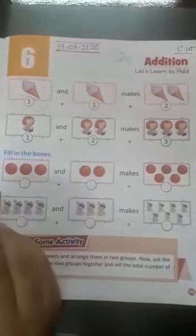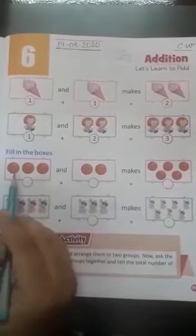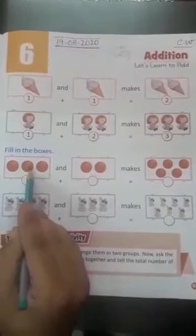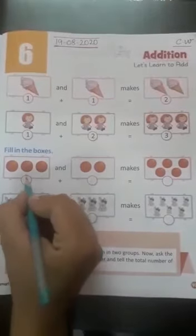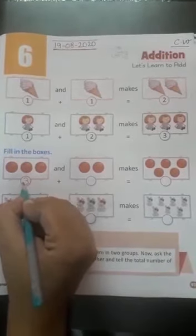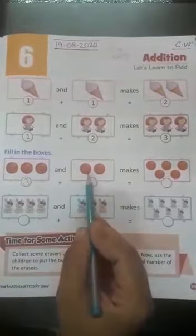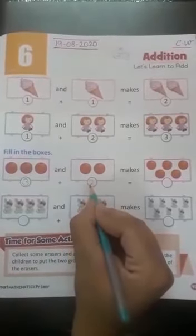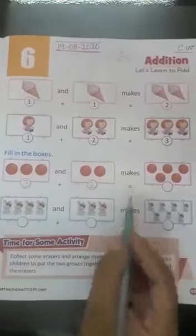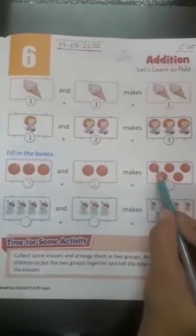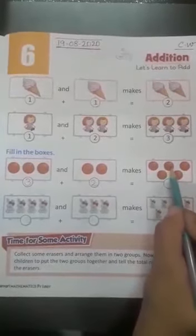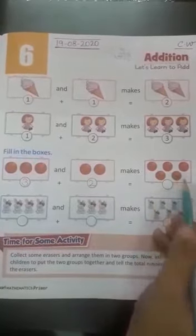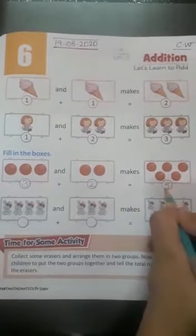Now we do it. Count how many balls are there: one, two, three. So we write here 3. And how many balls? One, two. We write 2. Now we count all the balls: one, two, three, four, five. We write here 5.